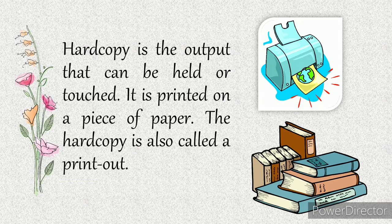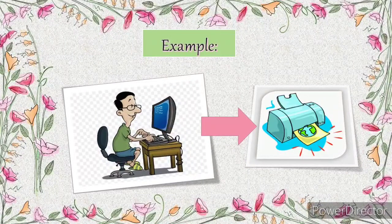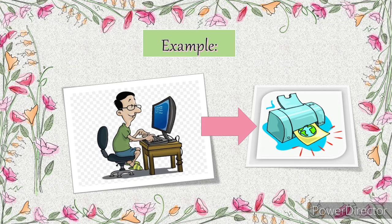The hard copy is also called a printout. For example, Christian needs to submit a computerized research paper to his teacher. He will type or encode his assignment in Microsoft Word. Then, after typing, he saves the file and prints it out. In short, the soft copy is the file that the student sees on the computer screen, and the hard copy is the printed copy of that file.